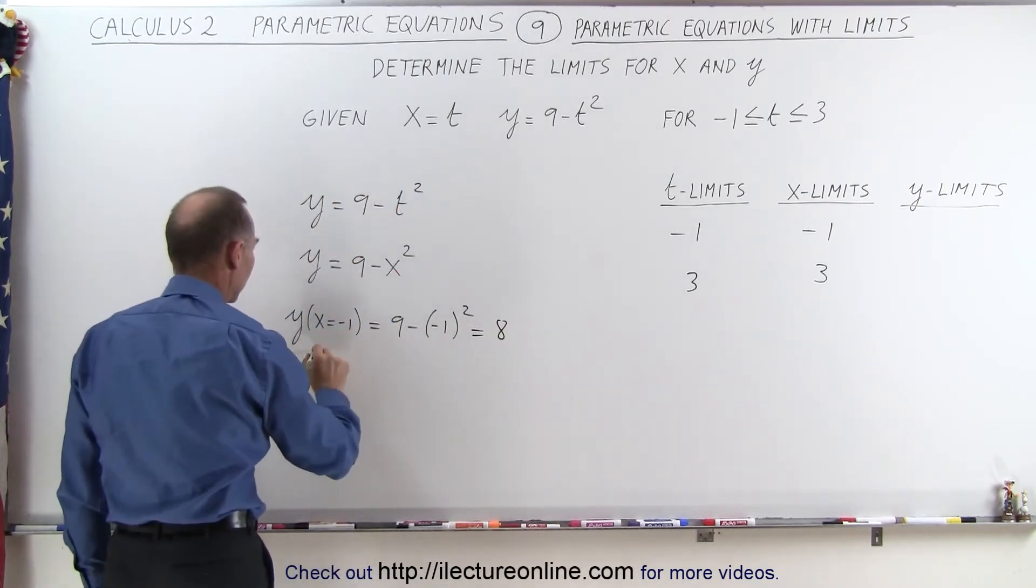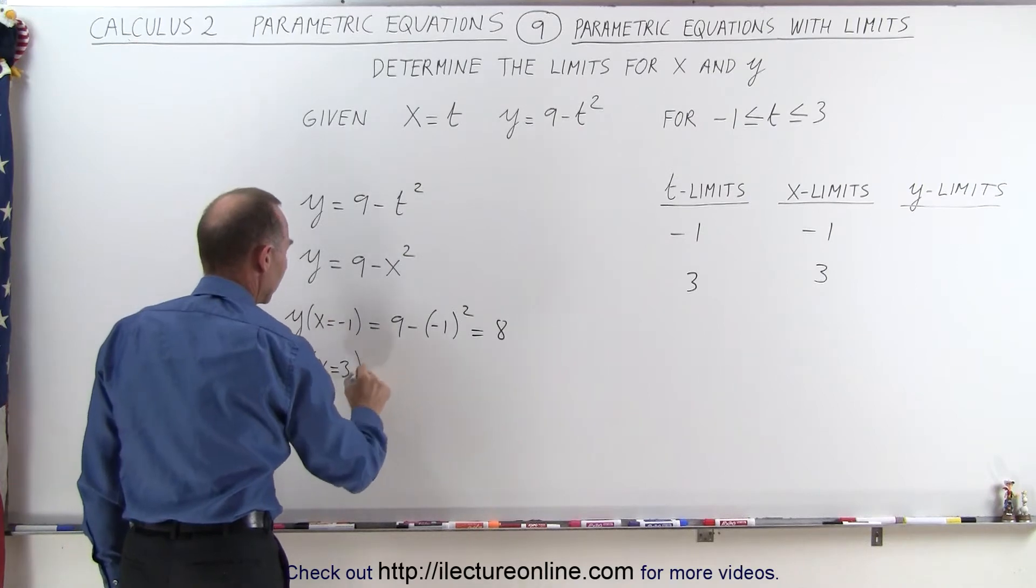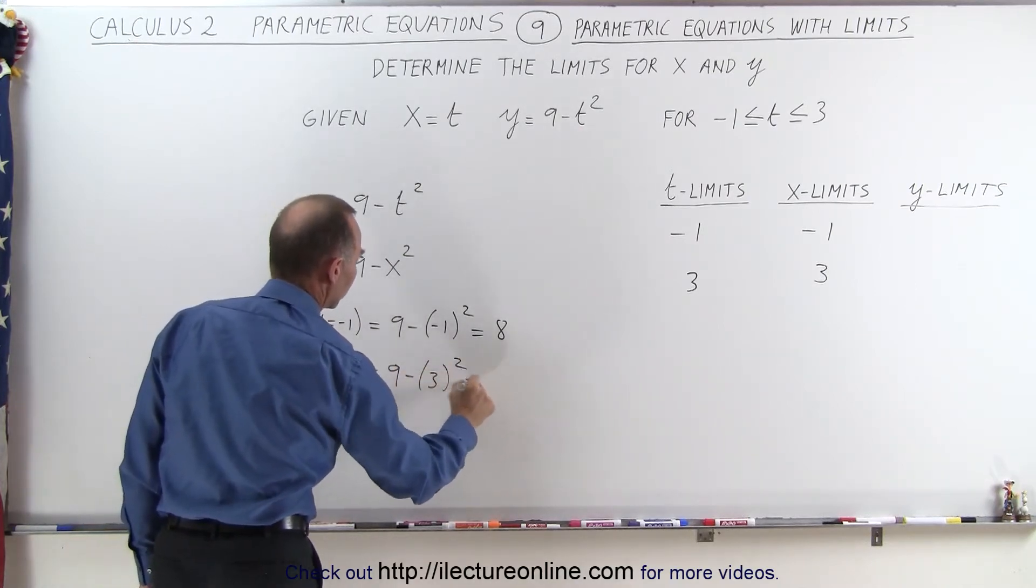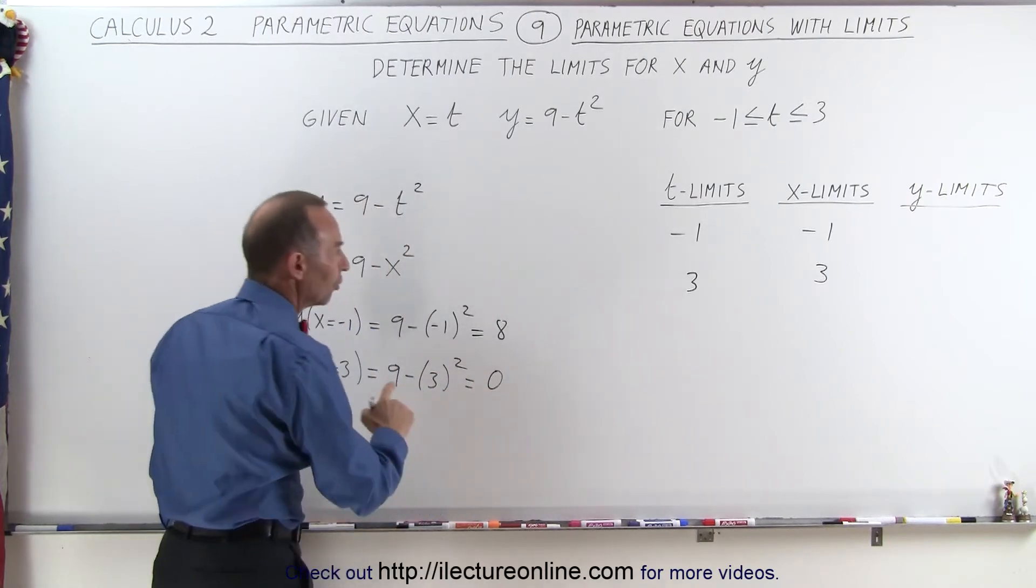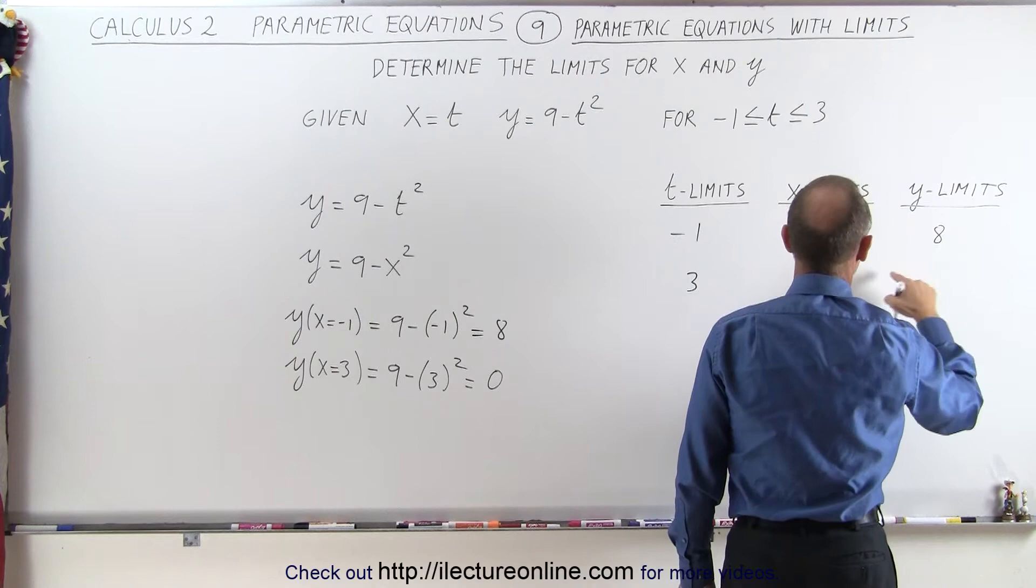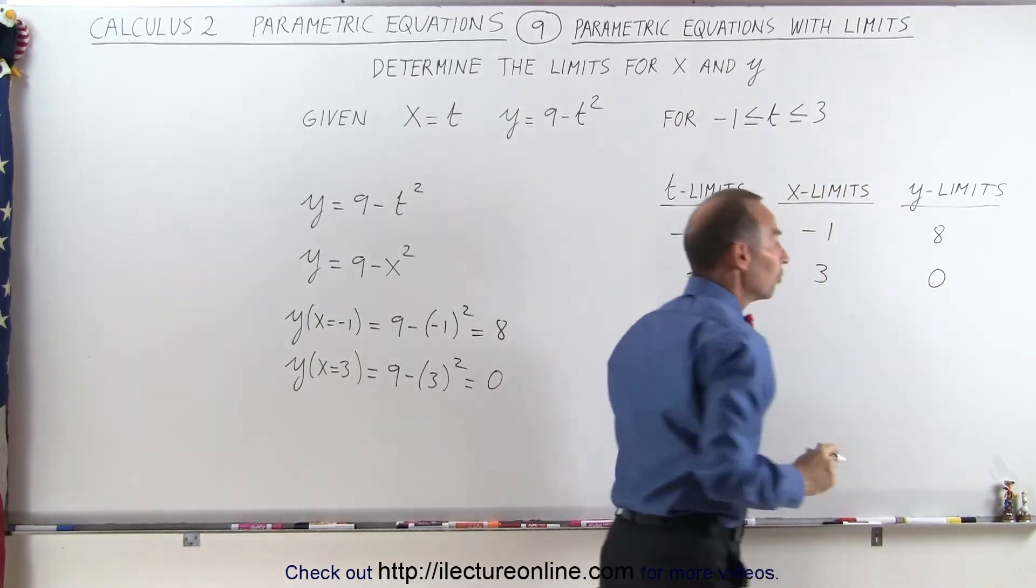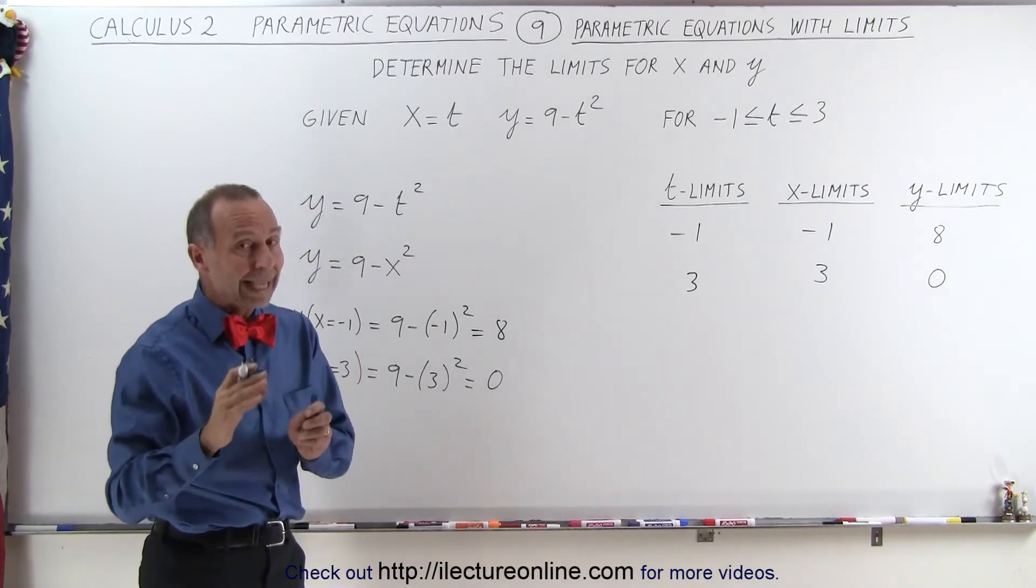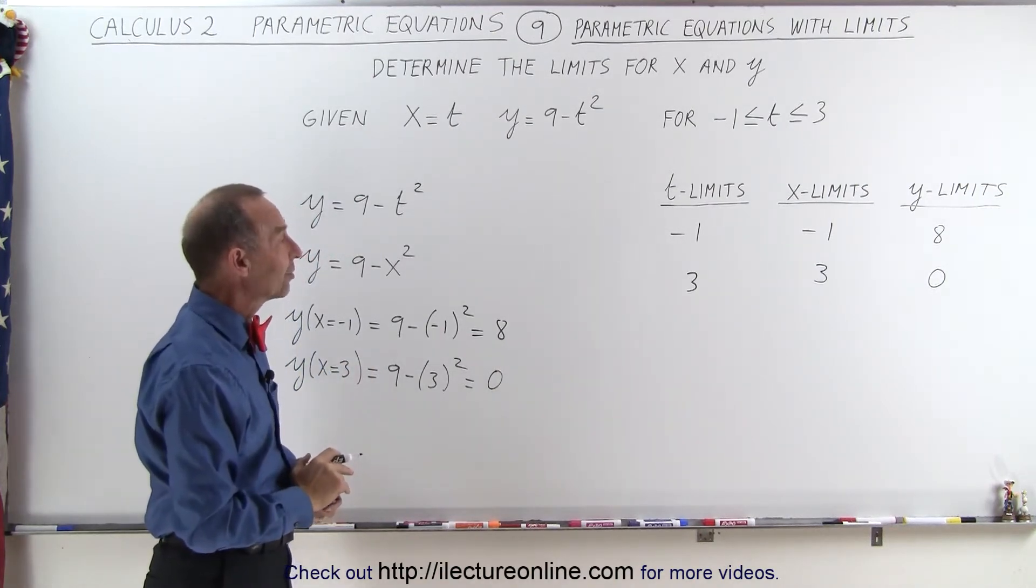And y, when x equals 3, is equal to 9 minus 3 squared, which is 9 minus 9, or 0. So when we plug those limits in, for y we get 8 and for y we get 0. So you may make the assumption that the limits for y are between 0 and 8, but that is not necessarily the case.